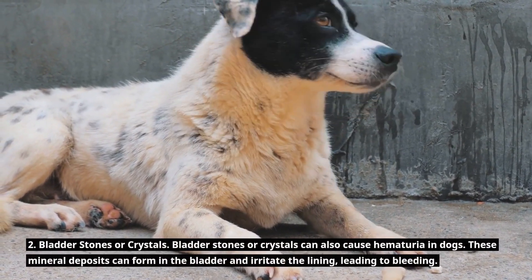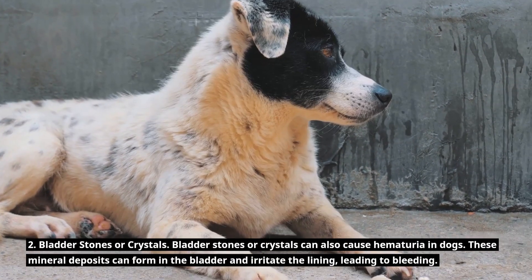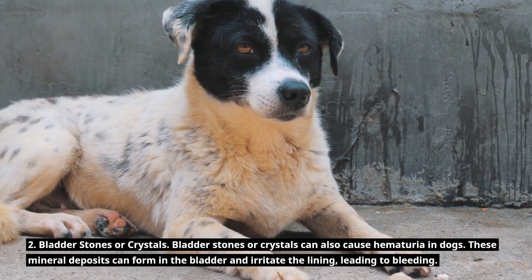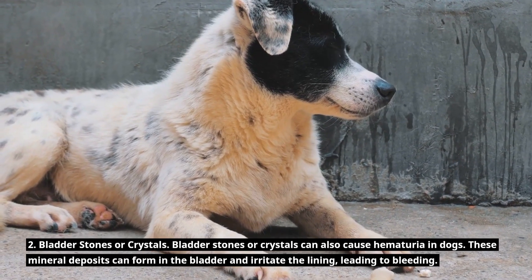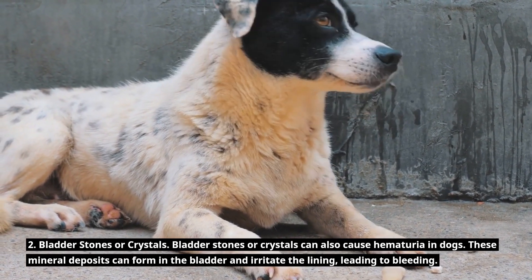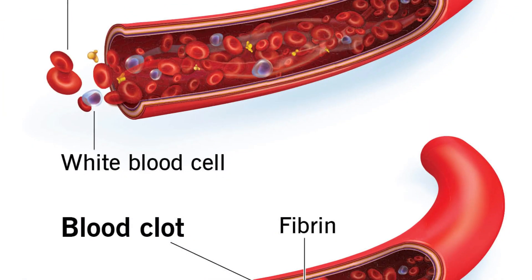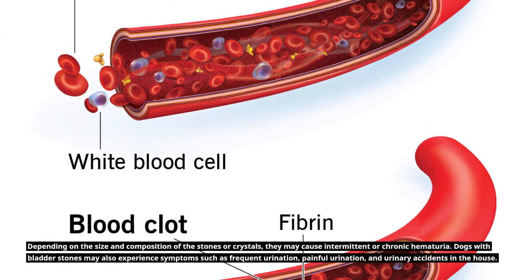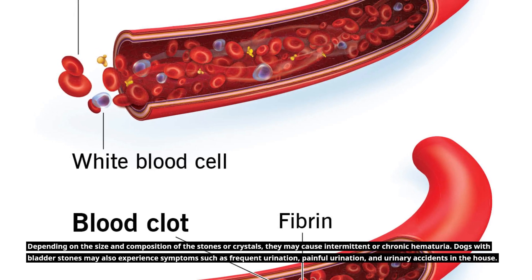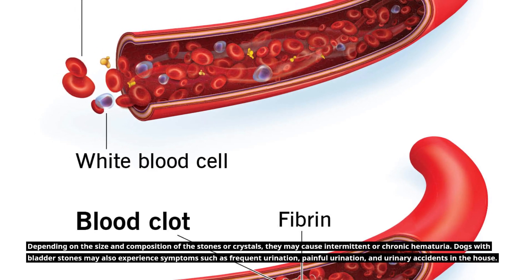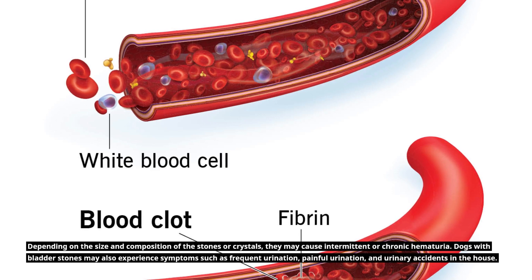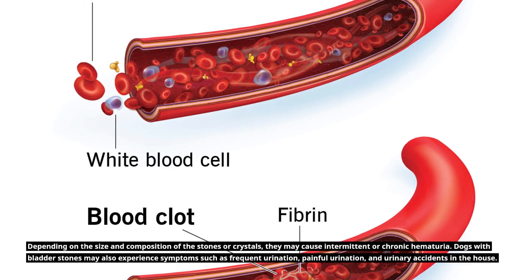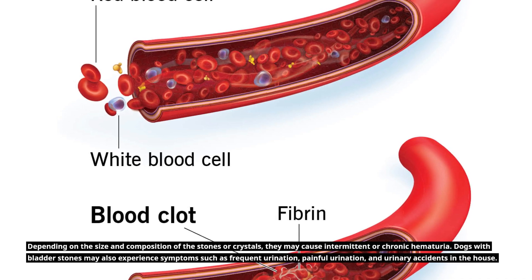2. Bladder stones or crystals. Bladder stones or crystals can also cause hematuria in dogs. These mineral deposits can form in the bladder and irritate the lining, leading to bleeding. Depending on the size and composition of the stones or crystals, they may cause intermittent or chronic hematuria. Dogs with bladder stones may also experience symptoms such as frequent urination, painful urination, and urinary accidents in the house.